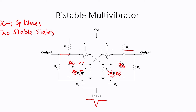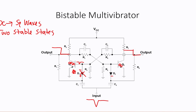In the second stable state, Q1 is going to be off. If Q1 turns off and is operating in cutoff, no voltage is dropped across R2, and our output is going to be high. That high is now felt on the cathode of D1, and we are reverse biased, meaning no current can flow through D1. If Q1 is off, Q2 is going to be on. With Q2 on, our output goes low, and that low voltage is felt on the cathode of D2, forward biasing D2.